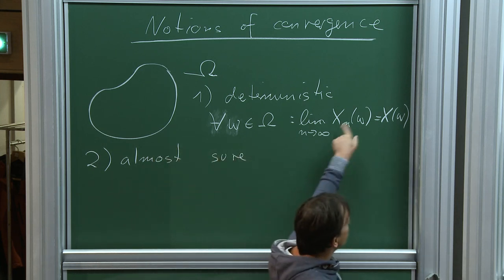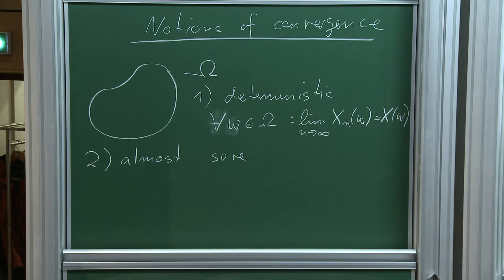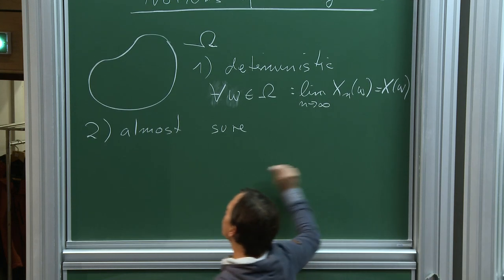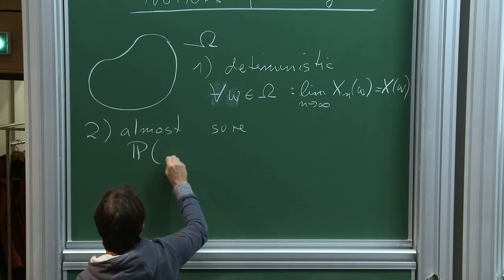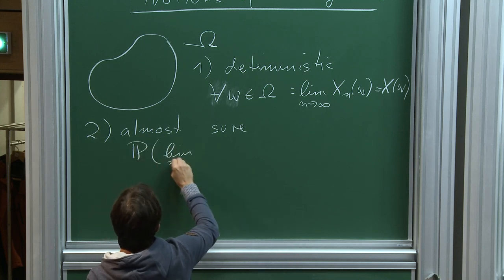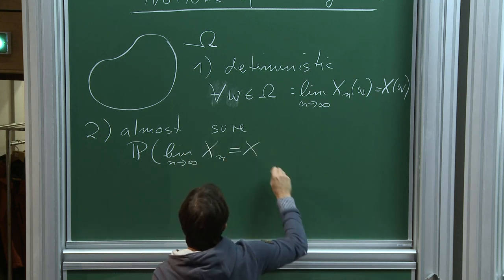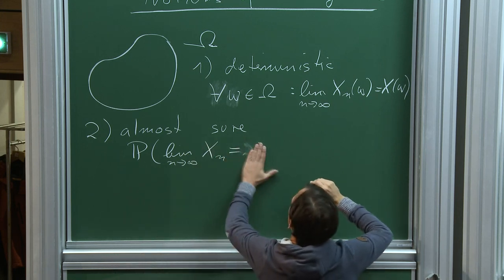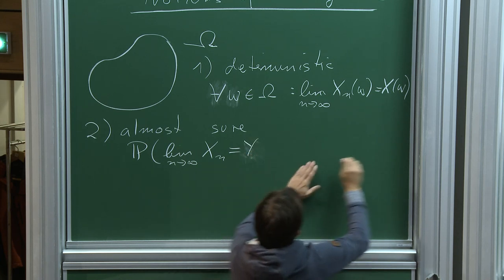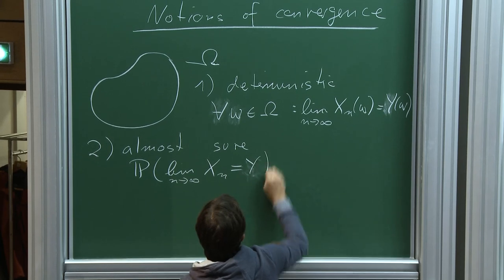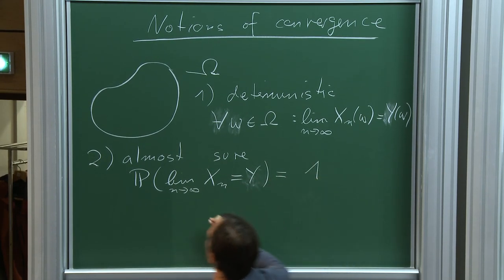Of course, x is a random variable and x_n is a sequence of random variables. More details will come in this proof for the special setting I want to discuss. Almost sure convergence is the statement that the limit as n goes to infinity of x_n equals y — the probability of that event is equal to 1.